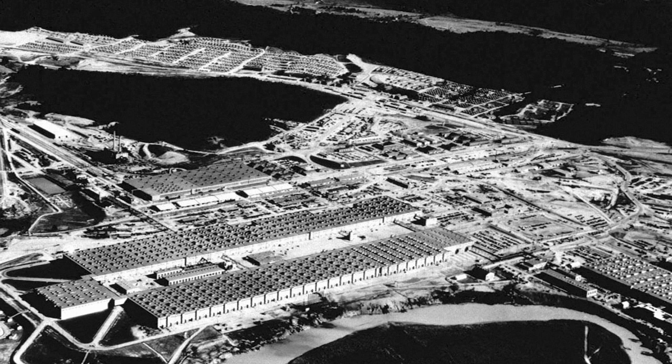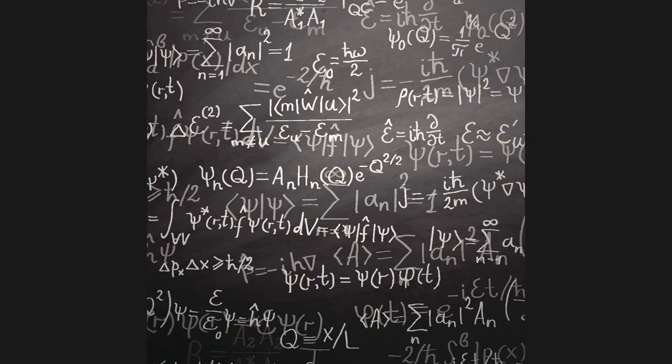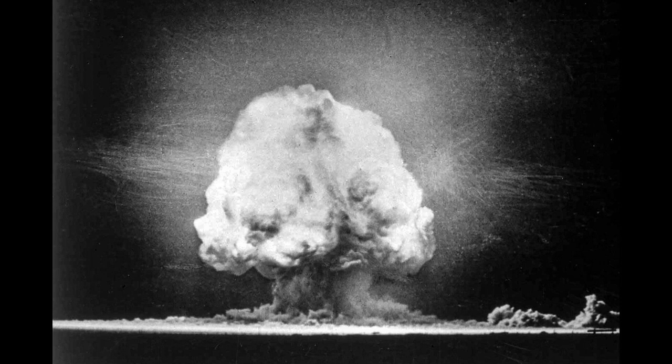The turning point came during World War II, when the Manhattan Project was launched in the United States. Led by physicist J. Robert Oppenheimer, this top-secret project aimed to develop an atomic bomb. In 1945, the world witnessed the devastating power of the atomic bomb when it was dropped on the Japanese cities of Hiroshima and Nagasaki, bringing an end to the war but leaving a lasting impact on humanity.